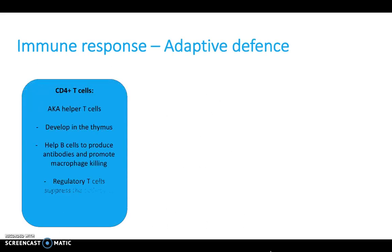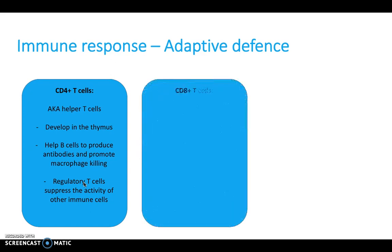Our adaptive defense is made up of three components. CD4 T cells — helper T cells — develop in the thymus and help B cells produce antibodies, and also promote the work that macrophages are doing by killing the foreign insult. They also regulate T cells and suppress the activity of other immune cells.